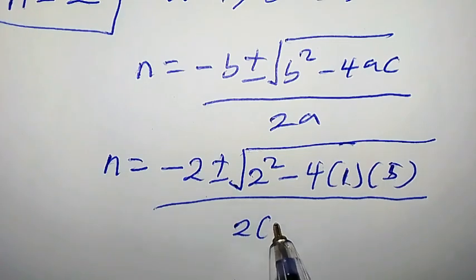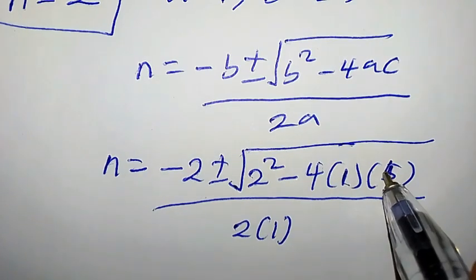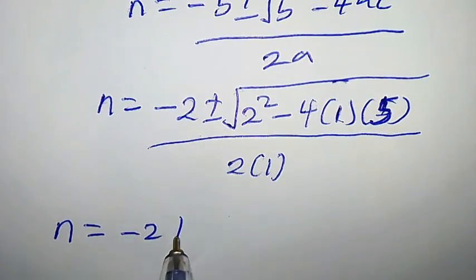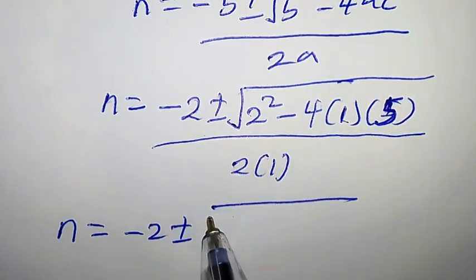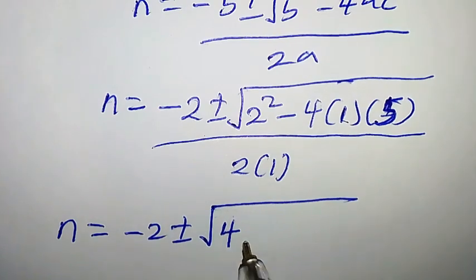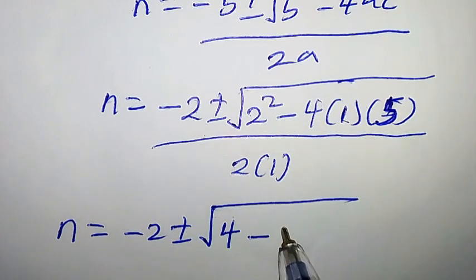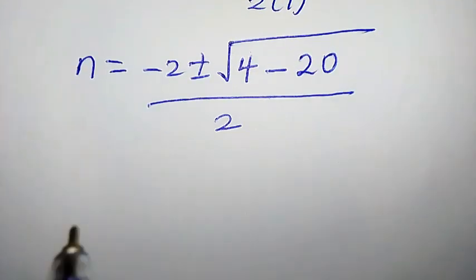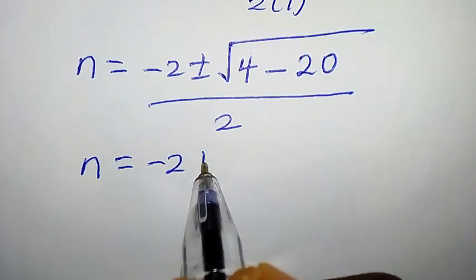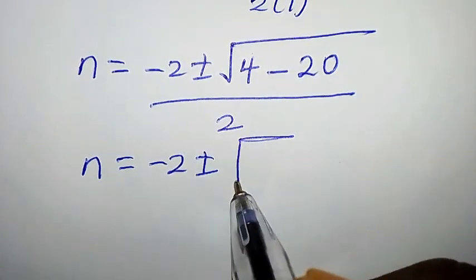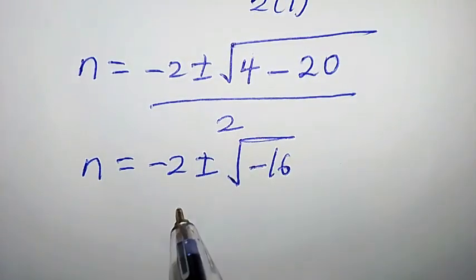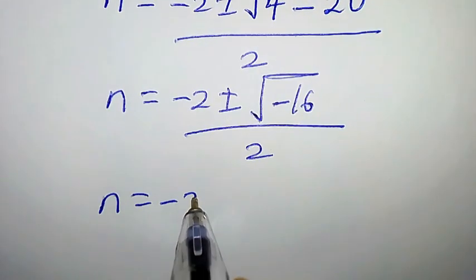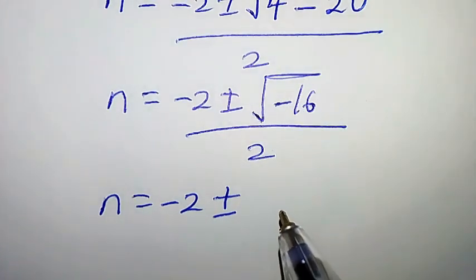So n equals minus 2, plus or minus square root of 2² minus 4 times 1 times 5, all over 2 times 1. That gives n equals minus 2 plus or minus square root of 4 minus 20, which is square root of negative 16, all over 2.